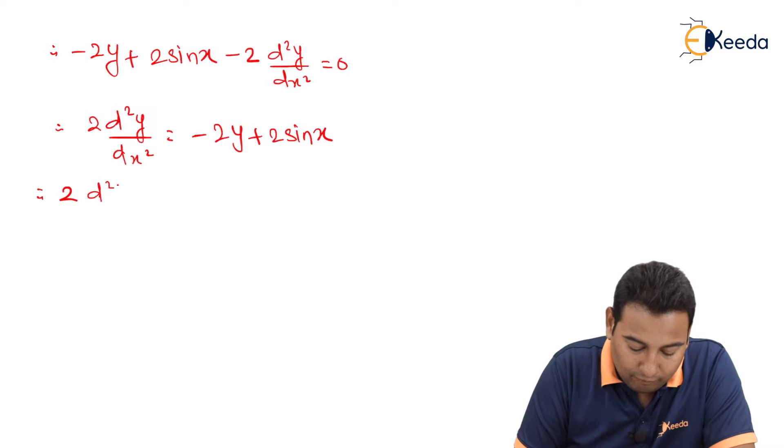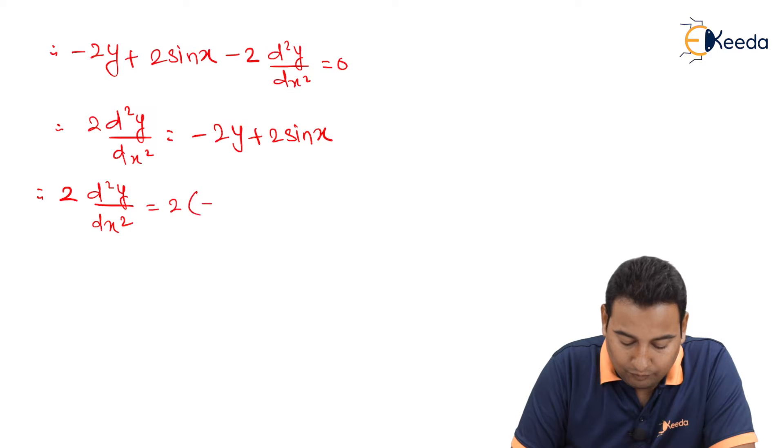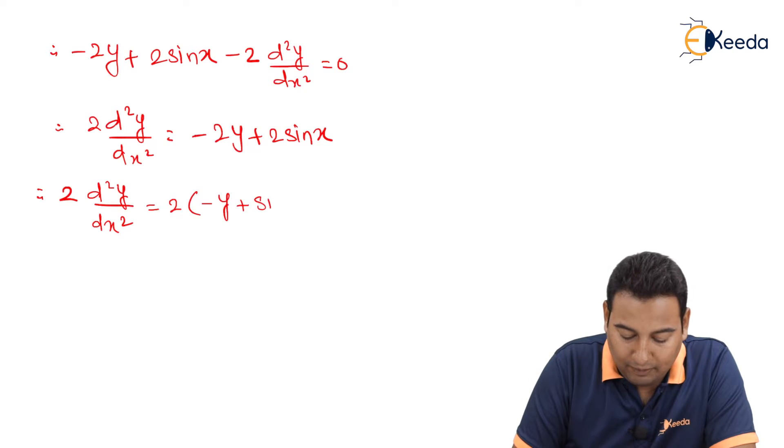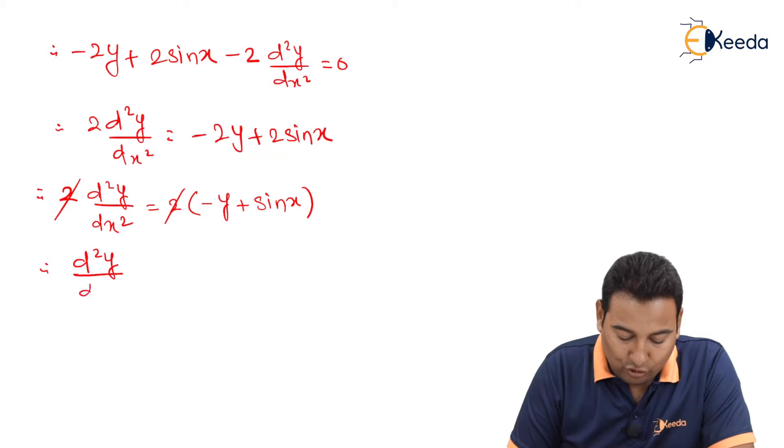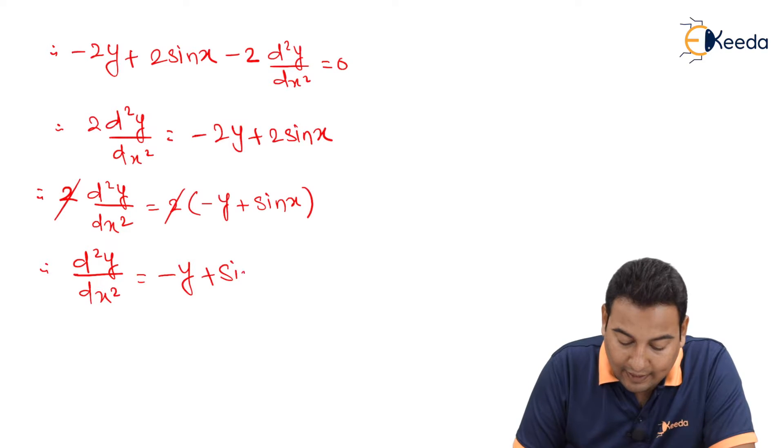Let's take 2 common on RHS. This is minus y plus sin x. This will be cancelled. And you will be left with d²y/dx² is equal to minus y plus sin x.